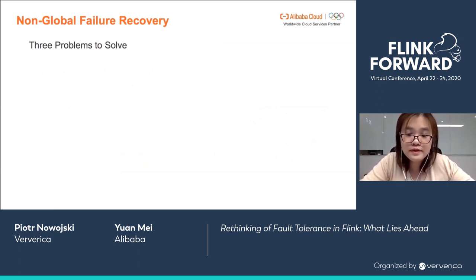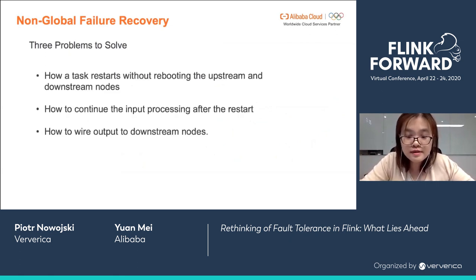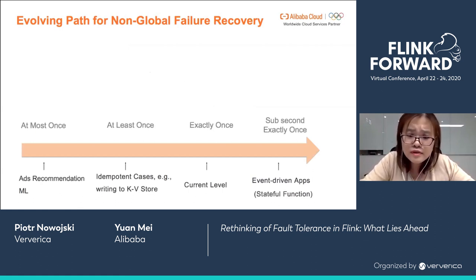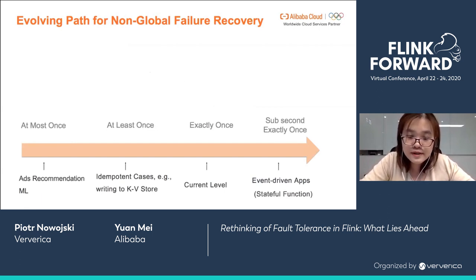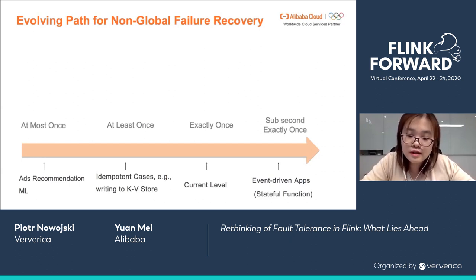How are we going to achieve non-global failure recovery? We have roughly three problems to solve. First, how a task restarts without rebooting upstream and downstream nodes. Second, how to continue input processing after the restart. Third, how to wire output to downstream nodes. In terms of the evolving approach, we are planning non-global failure recovery across stages — from at-most-once, which allows a certain level of data loss and is useful for cases like machine learning and ads recommendation, to at-least-once, which allows data duplication and is useful for cases like writing to a key-value store, to exactly-once, which is what we currently support but only in the global failure recovery model.